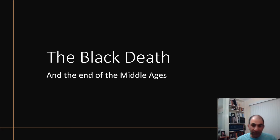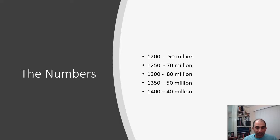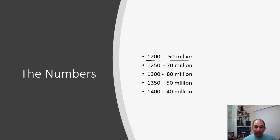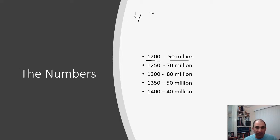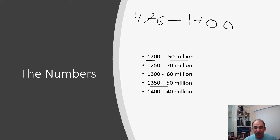Let's start by looking at some numbers, which are pretty dramatic. These are years and population figures in millions for Western Europe. Around 1200 A.D., there were about 50 million people. The numbers rise — around 1300, about 80 million. Then you see a dramatic drop: by 1350, about 50 million; by 1400, maybe about 40 million. We don't know the exact figures, but the pattern of dramatic decline in the mid-1300s is clear.